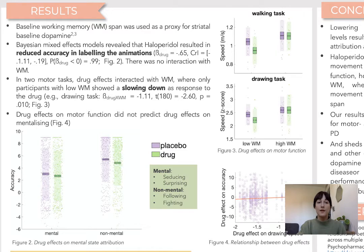We also found that haloperidol slowed down movement speed in our two motor tasks. And in these two tasks, we did indeed find the expected interaction between drug effects and working memory score, in that only participants with low baseline working memory showed a slowing down as a response to taking the drug.